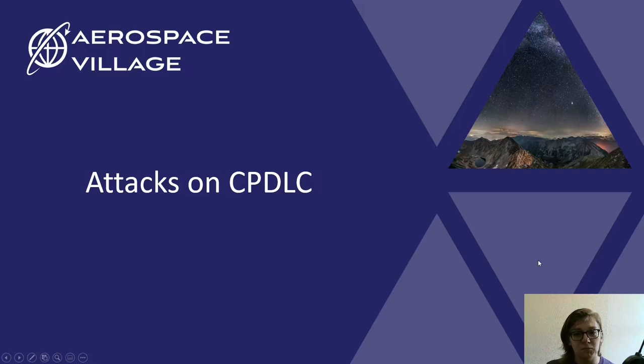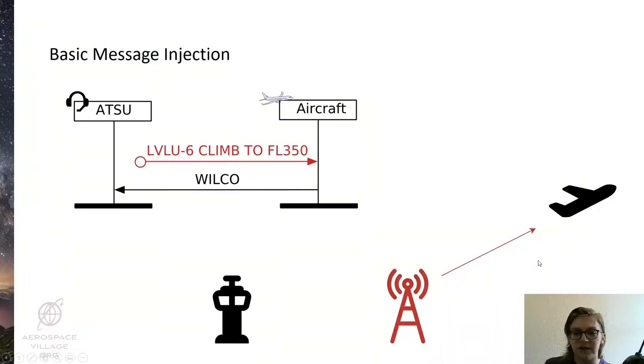So now that we've got that groundwork out of the way, we can start looking at attacks on the protocol. The most basic form of attack is a message injection in which we set up our antenna between the ground station and the aircraft, and we inject a crafted message appearing to come from the legitimate ground station. In this case we inject the same climb to flight level 350 message that we saw in the earlier slide.